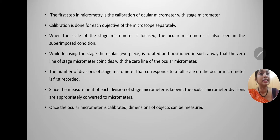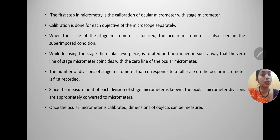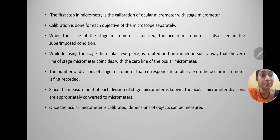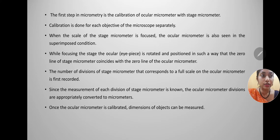The first step in micrometry is the calibration of the ocular micrometer with that of the stage micrometer. Calibration is done for each objective of the microscope separately. For example, if using 10x, calibration must be done for 10x separately; if using 45x, it must be recalibrated at 45x.